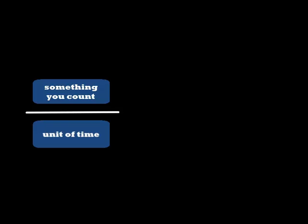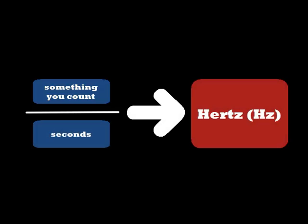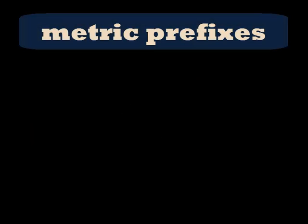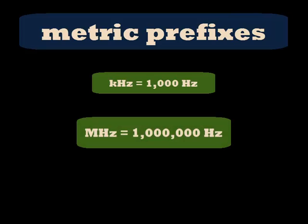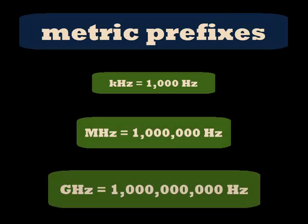When the unit of time on the bottom is seconds, we use the abbreviation hertz for the unit. Large frequencies often have metric prefixes like kilohertz, which is thousands of hertz, megahertz, which is millions of hertz, or gigahertz, which is billions of hertz.